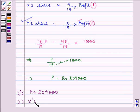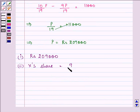X's share in profit will be equal to 9 upon 19 into 209,000.